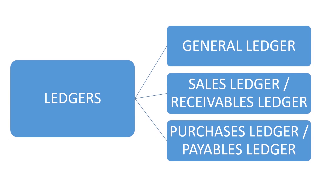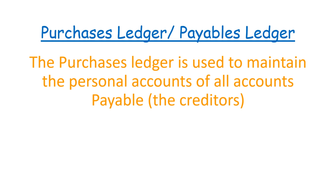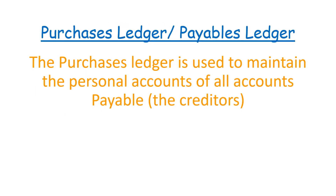Now let's look at what we mean by a purchaser's ledger, or a payables ledger. A purchaser's ledger is used to maintain the personal accounts of all accounts payable. If you own a shop that sells merchandise and your suppliers give you goods on credit, it means you're supposed to pay back. In your books of accounts, this kind of person is recorded as a creditor.